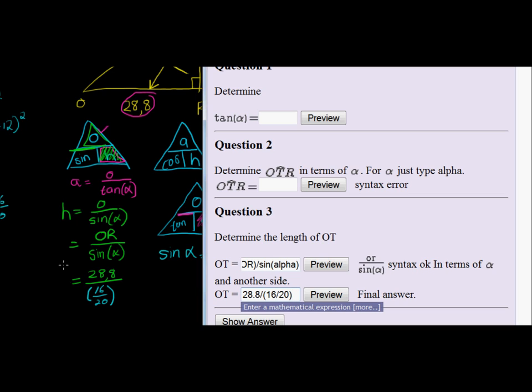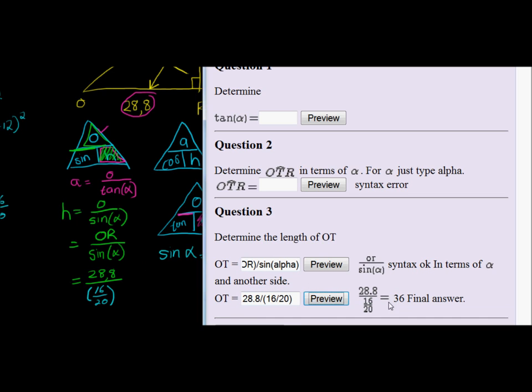And if I want to, I can preview the answer. I see, oh, my answer is exactly 36. So if I want to, I can just answer 36. And there we go.